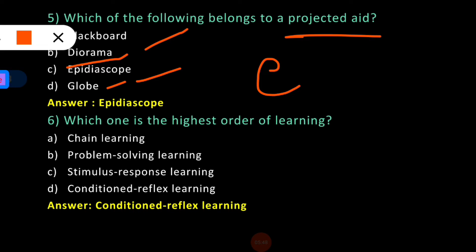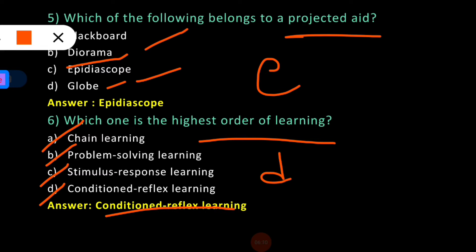The sixth question: Which one is the highest order of learning? There are four learning processes: (A) Chain Learning, (B) Problem Solving Learning, (C) Stimulus Response Learning, and (D) Conditioned Reflex Learning. The answer is Conditioned Reflex Learning — option D. Conditioned Reflex Learning is the highest order of learning.